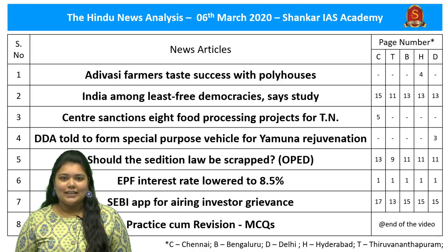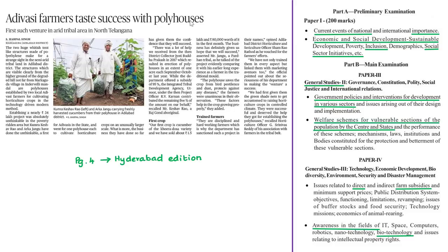Let's move on to the first article analysis. This news article talks about the initiative taken by two Adivasi farmers in the semi-arid tribal land of Adilabad district in north Telangana. The two farmers have established polyhouses for cultivating horticulture crops. They claim that the polyhouses save the crop from damage caused by birds and dust, and also protect the crop from diseases. In this context, let us see the concept of polyhouses and its advantages and disadvantages.